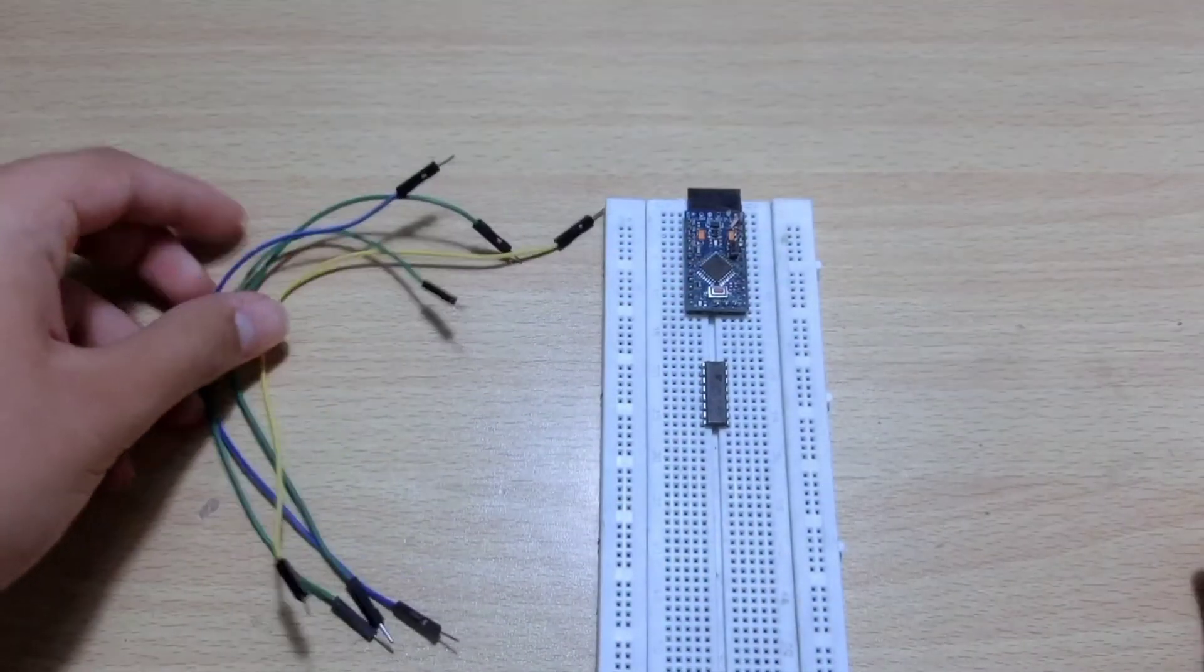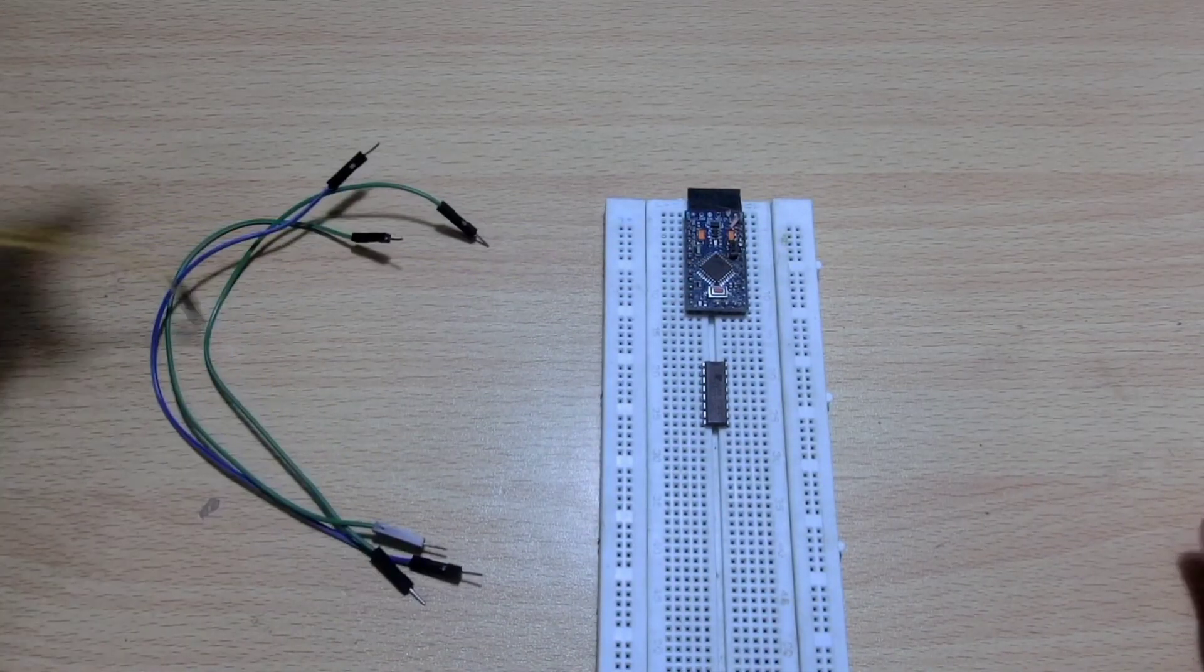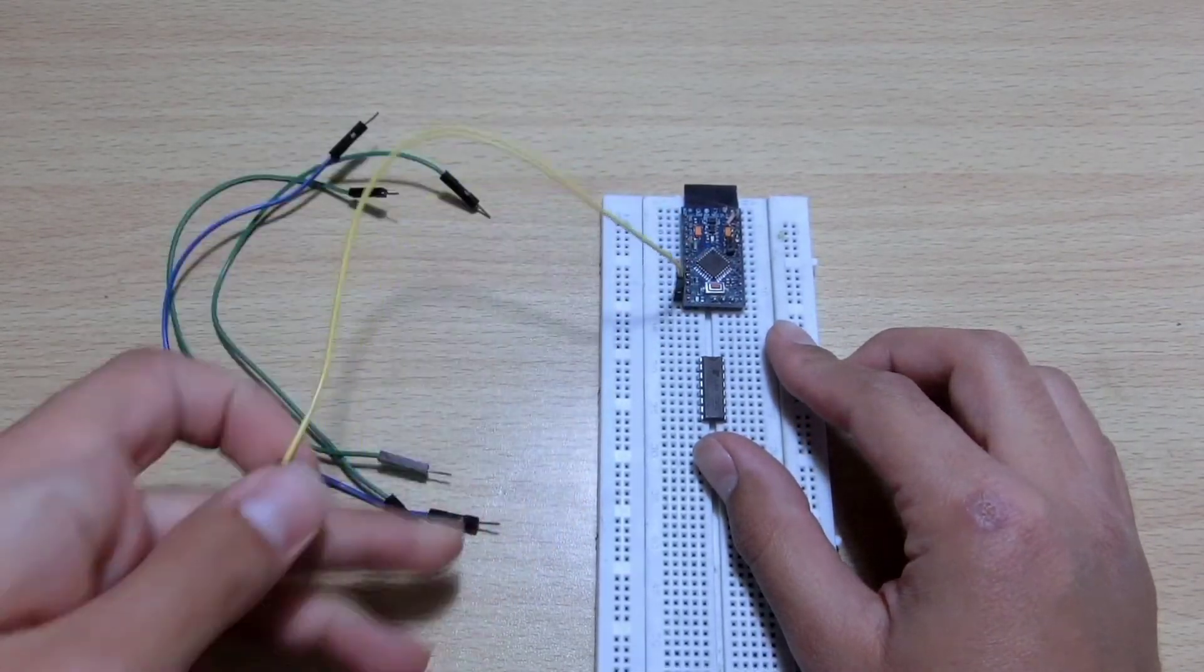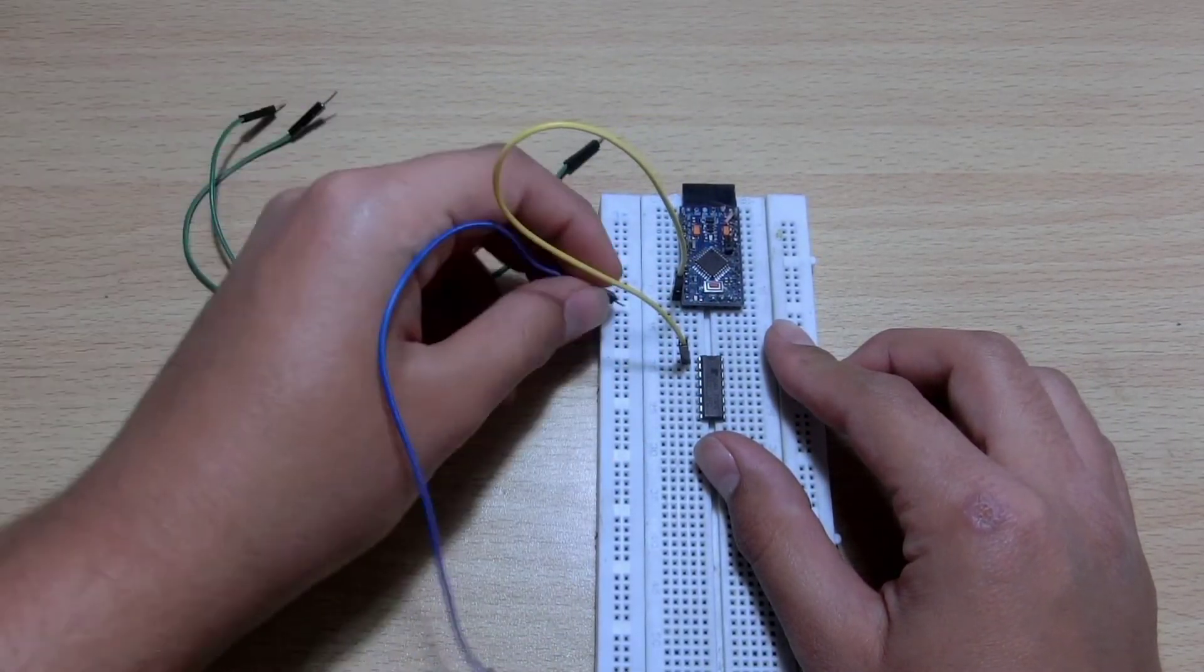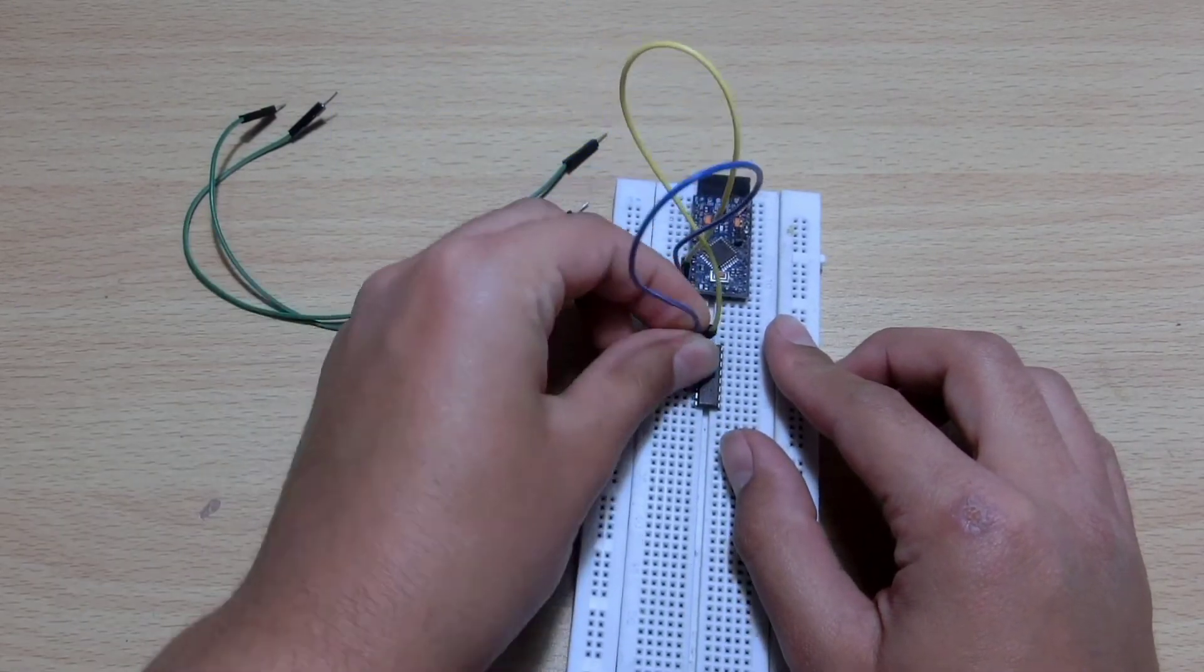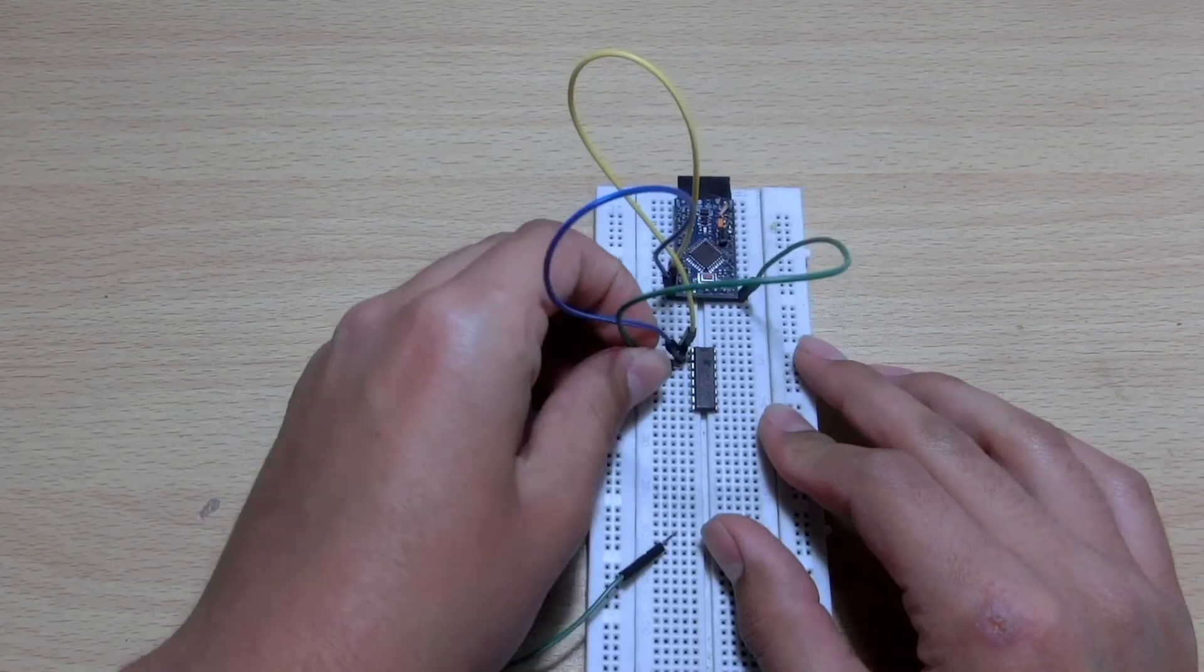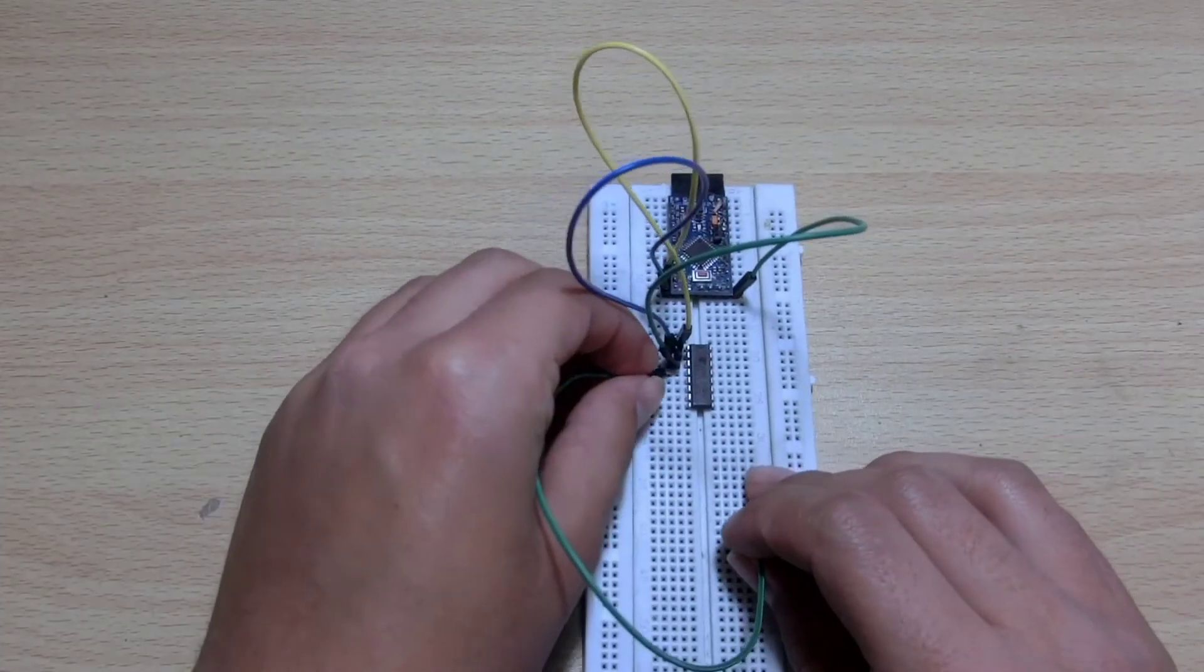Now take 4 jumper wires. Now attach pin 8 of Arduino to IN1 of IC, pin 9 of Arduino to IN2 of IC, pin 10 of Arduino to IN3 of IC, pin 11 of Arduino to IN4 of IC.